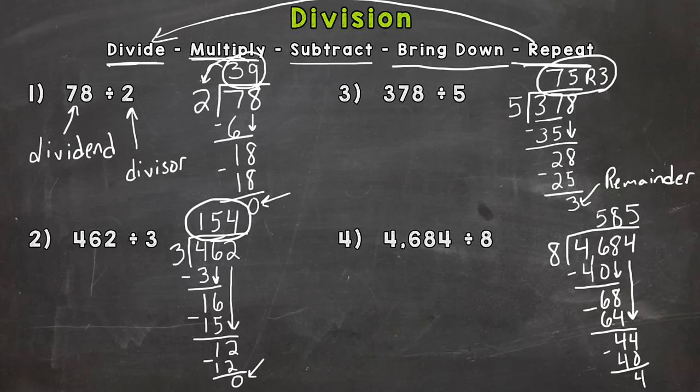Subtract 44 minus 40 is 4. We went all the way over to the 1's place and brought down that 4. So we are done. That 4 is what is left over. So that is the remainder. So our quotient or answer to the division problem is 585 remainder 4.